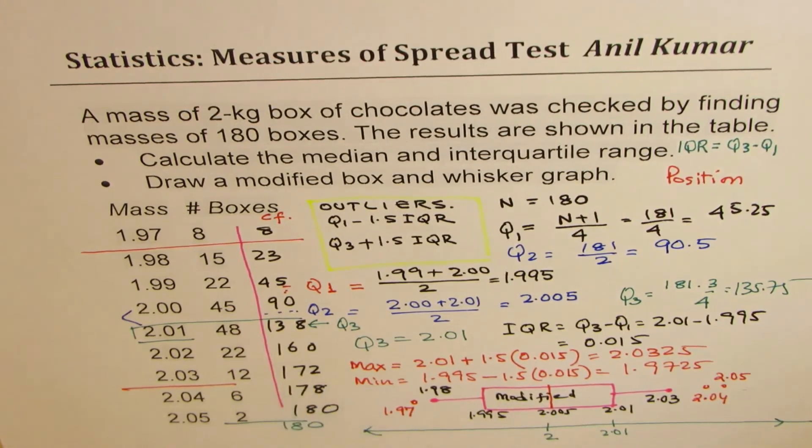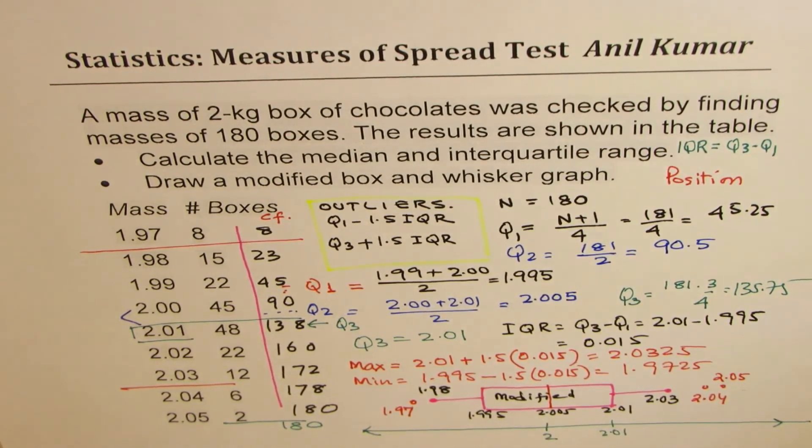So I hope this concept is clear. Quartiles once again divide the whole data into 4 equal groups. In this example, every quartile range has 45 elements, and interquartile range is difference between Q3 and Q1.